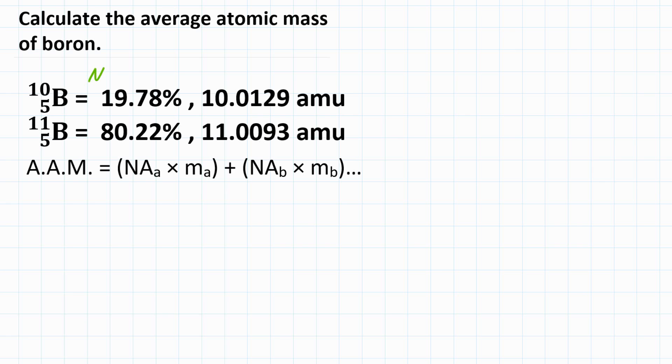You need one, the natural abundance, and that is the percentage of atoms for an element that are a specific isotope.